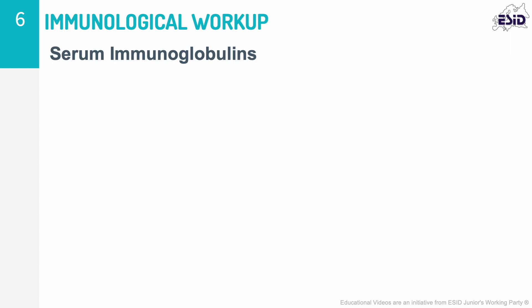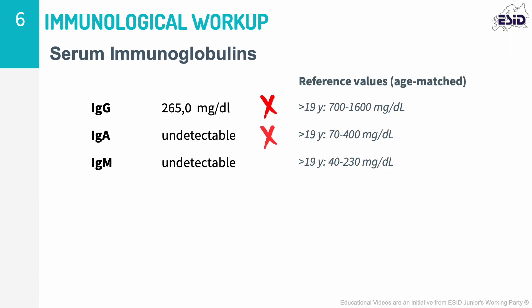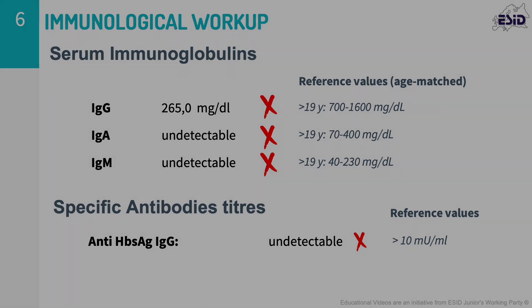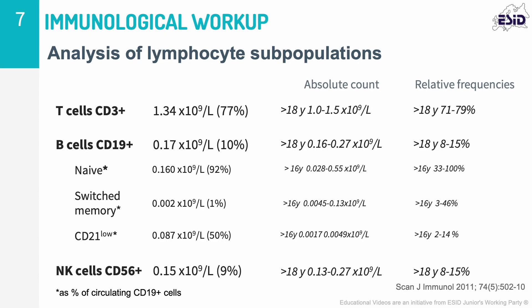Initial immunological investigations showed low levels of IgG. IgA and IgM were absent. Serum levels of specific IgG to unconjugated pneumococcal vaccine were low despite previous immunisation. CD19 positive cell counts and T-cell subsets were within normal range, although some patients with CVID do have low naive T-cells. A more specific peripheral B-cell panel showed a severe reduction in switch memory B-cells and an expansion of CD21 low B-cells.